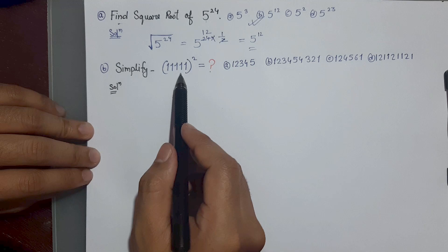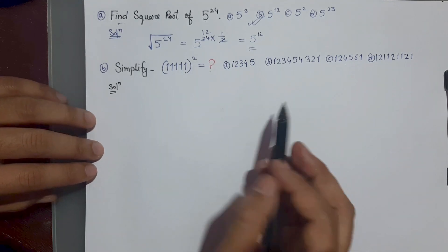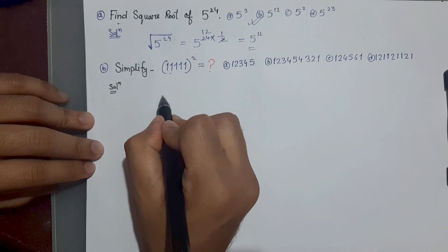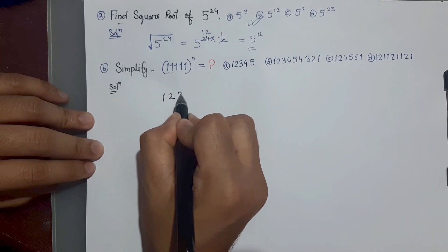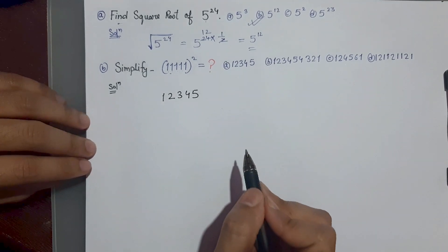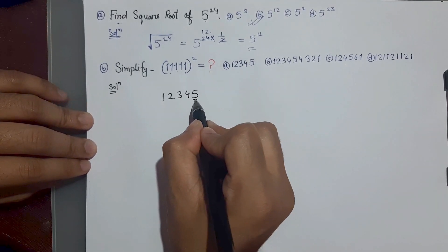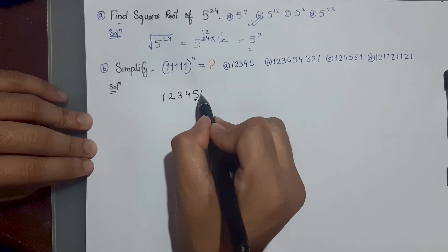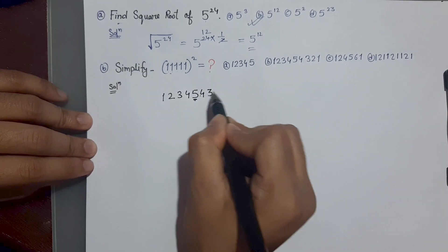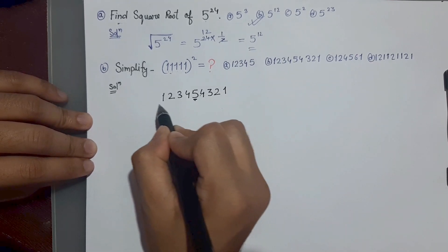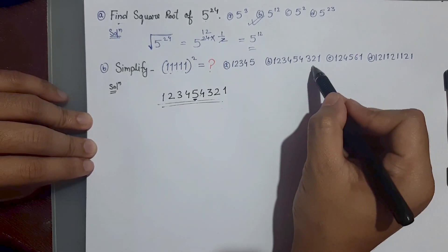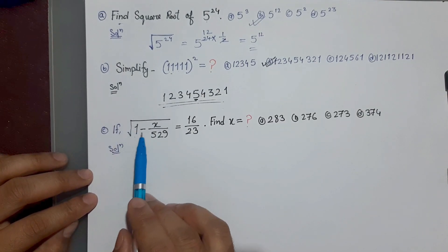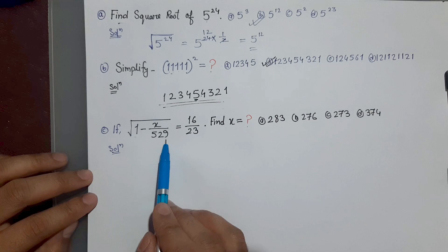Next, if we find out 11111 bar whole square — let's count how many 1s there are: 1, 2, 3, 4, 5 ones. So we write 1 2 3 4 5, then consider 5 as the starting point, and write back down 5 4 3 2 1. That is our answer.